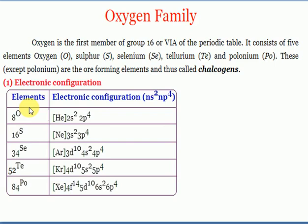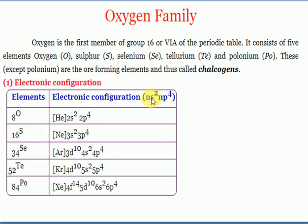The general electronic configuration of 16th group elements: since they have six valence electrons, those six electrons are accommodated in ns² and np⁴ orbitals. So the general electronic configuration is ns²np⁴. The ns orbital accommodates two electrons and the np orbital accommodates up to six, so the first two go to ns and the remaining four go to np.